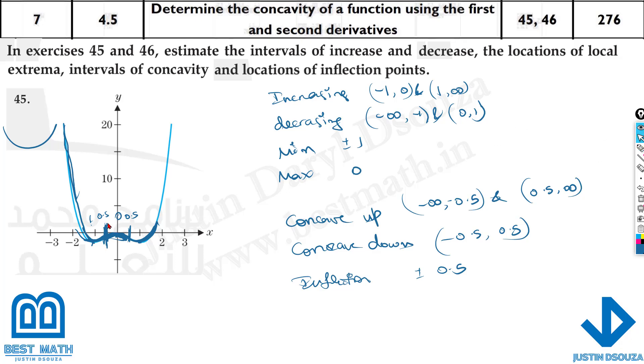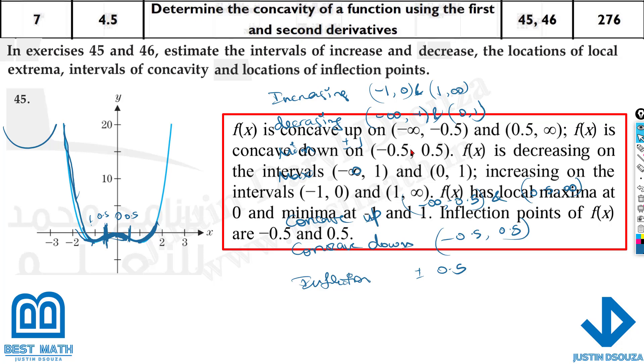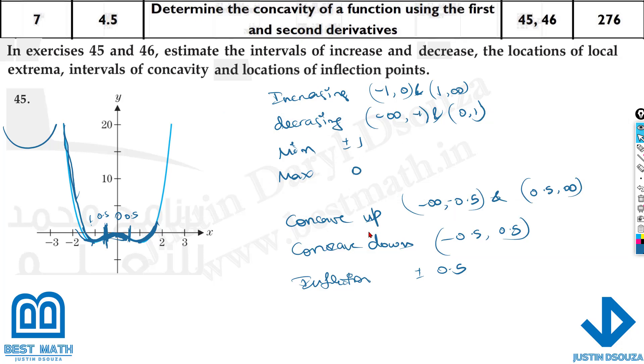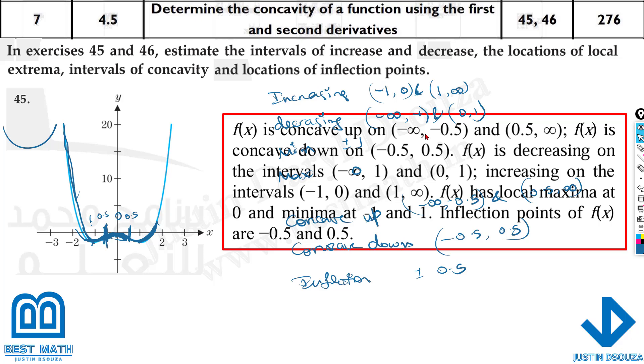So just by looking at the graph, you can tell you should focus on the points where it's turning. Over here they have to see concaving up. We have written minus infinity and this is correct. And it's down at minus 0.5 to 0.5.